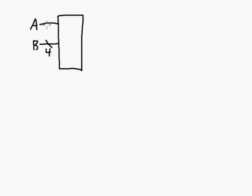Let's look at a block diagram of the comparator. We have number A coming in and number B coming in - let's say each of these is four bits, so these are four-bit unsigned numbers. Coming out of the comparator are three signals: A less than B, A greater than B, and A equal to B - each a single bit, one if the condition is true, otherwise zero.